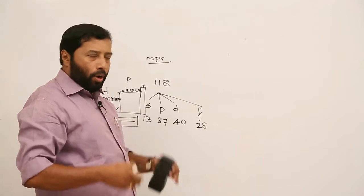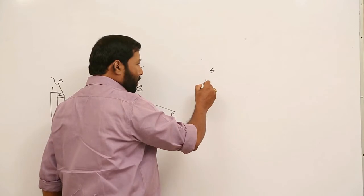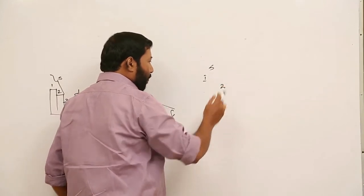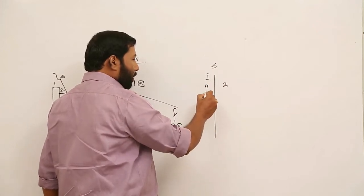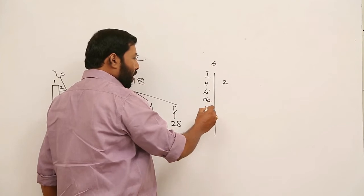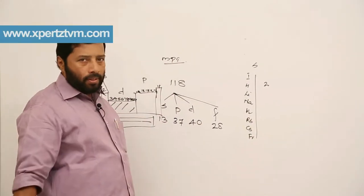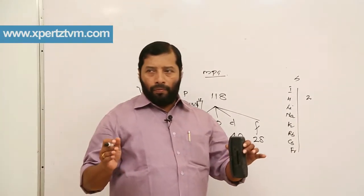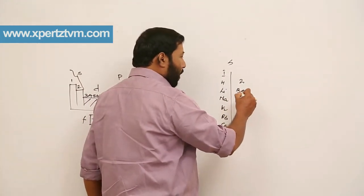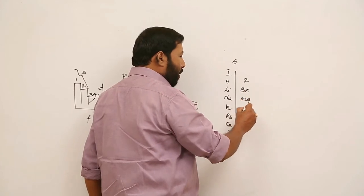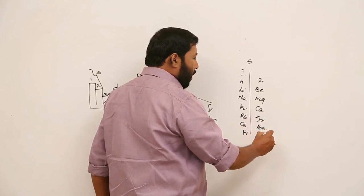The left extreme of the main body is known as S block. S block contains the first group and second group. The first group members are: hydrogen, lithium, sodium, potassium, rubidium, cesium, and francium — 7 members. The second group contains beryllium (Be), magnesium (Mg), calcium (Ca), strontium (Sr), barium (Ba), and finally radium (Ra).